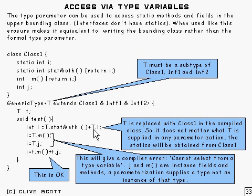That's OK, and T.i is OK as well, because what happens is the compiler replaces T with class1, so you're just doing the same thing as if you wrote class1.statMeth and class1.i. That's what happens when it's compiled. It doesn't matter what T is supplied to any parameterization. It makes no difference whatsoever. You're going to be accessing the stuff in class1.